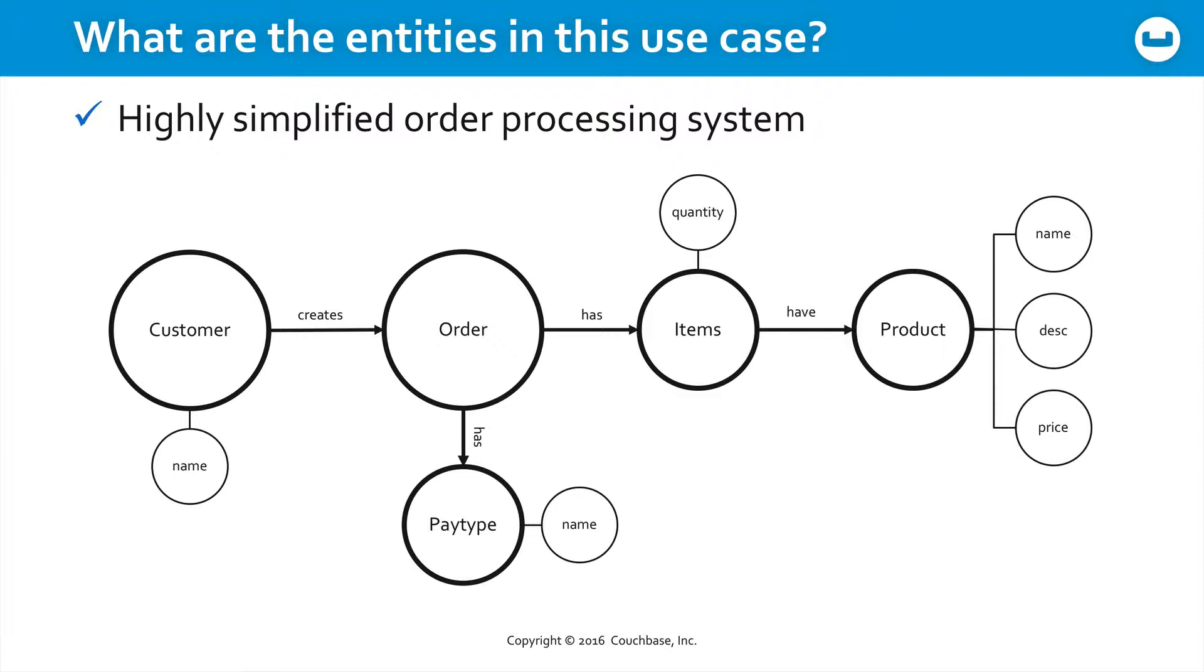Now, each of these has various attributes associated with it, like a product has a name, description and a price. Each row in the order, each one of the items, has a quantity associated with it. Customer and pay type each have names. So who are the actors in this particular system? Are each one of these - customer, order, items, product, and pay type - an actor?